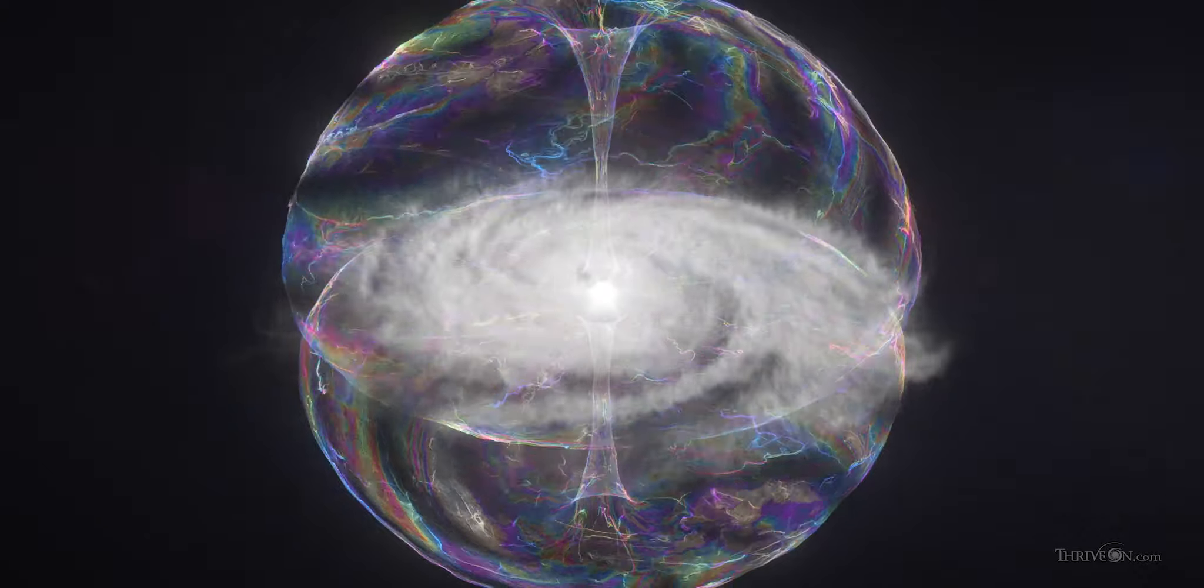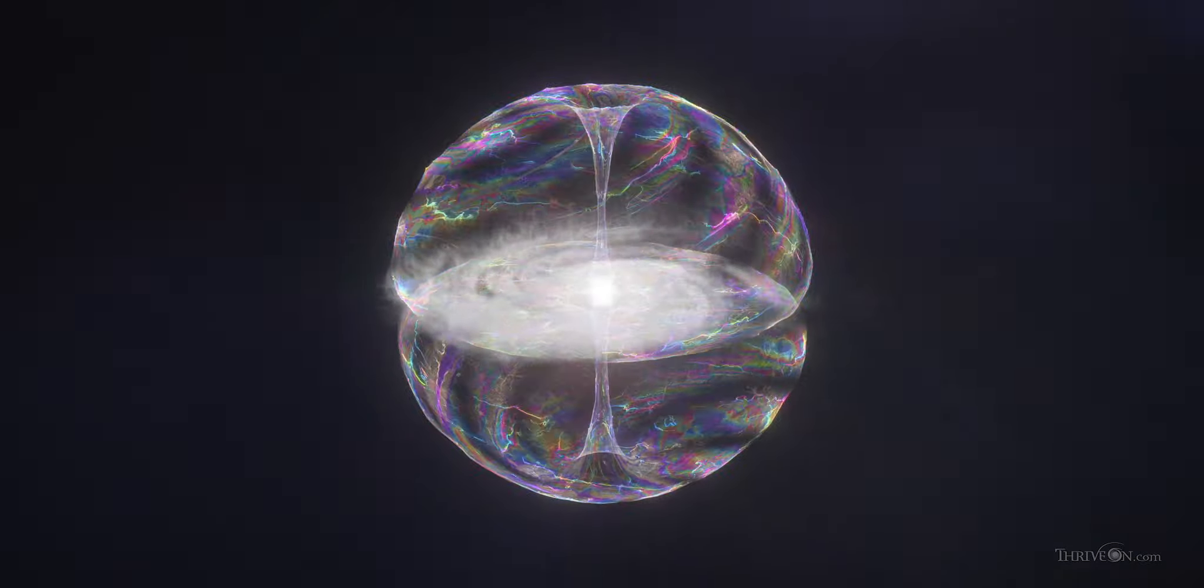Picture the eye of a hurricane. At the center of every torus is a point of stillness.